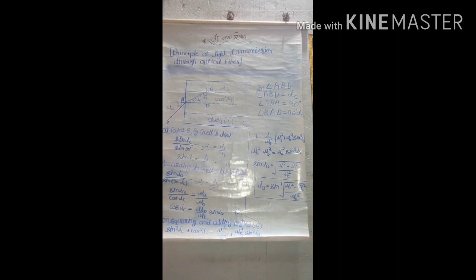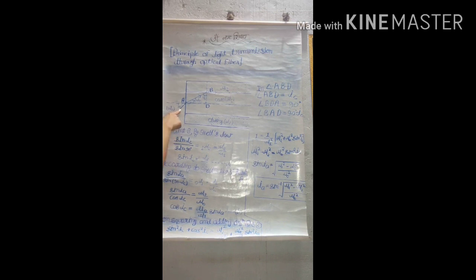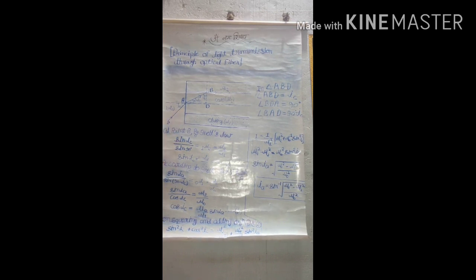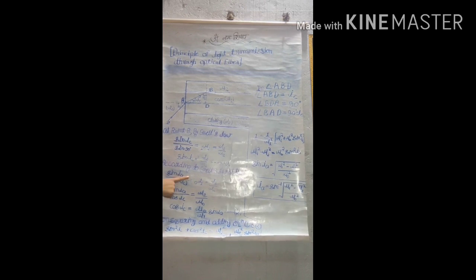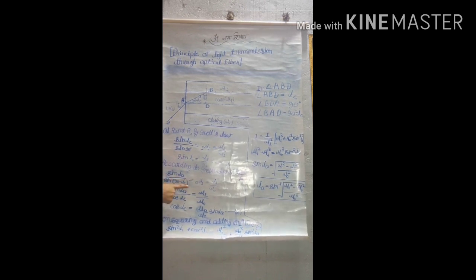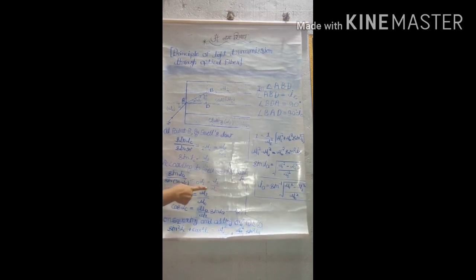Now at point A, the angle of incidence is IA and the angle of refraction is 90 minus IC. Again, according to Snell's law at point A, we can write sin IA upon sin (90 minus IC) is 0-mu-1, and we can write 0-mu-1 equals mu1 upon mu0.